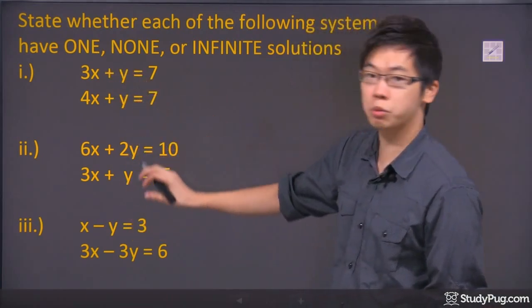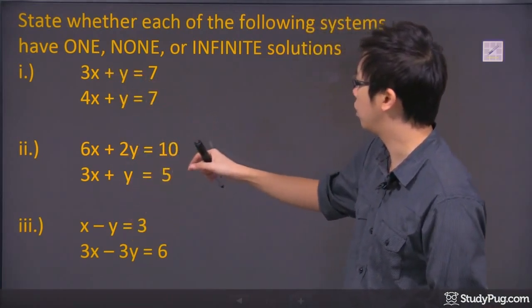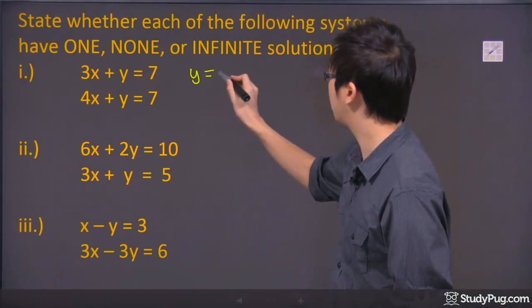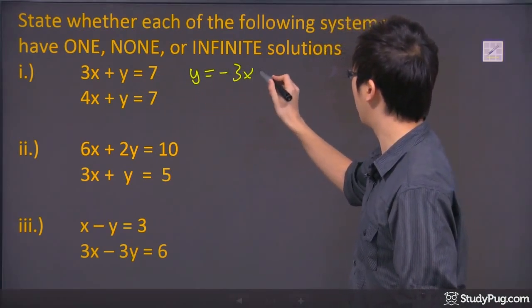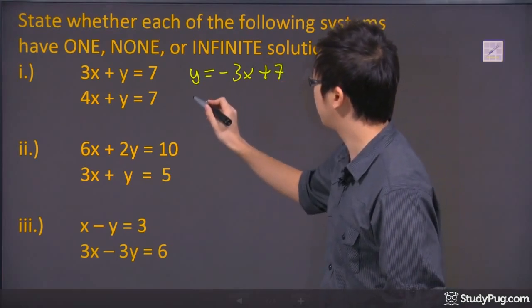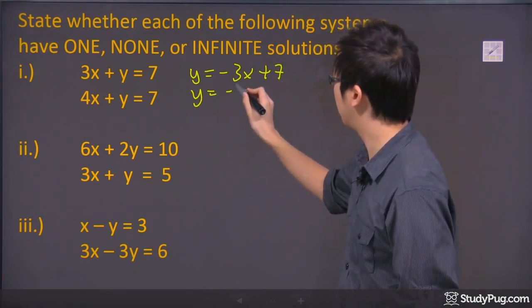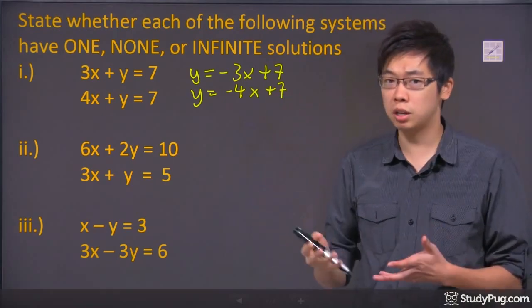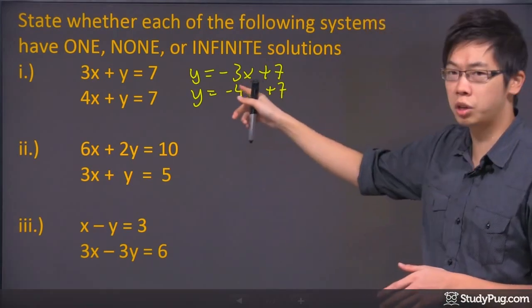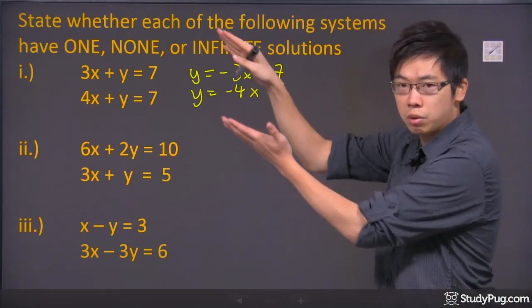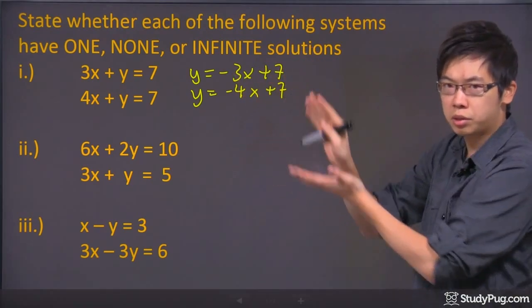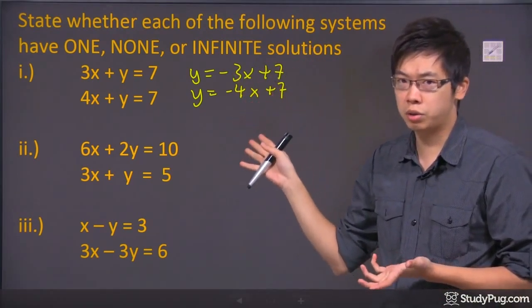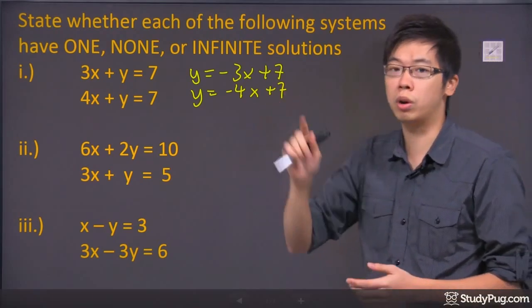So we have three systems right here. Let's take a look at the first one. If I solve for y here, it will be y equals negative 3x plus 7. And this one will be y equals negative 4x plus 7. It looks very identical, but if you actually take a look at the slope, it's going the same direction but the steepness is slightly different. Having a different slope but the same y-intercept is actually going to give you just one solution.